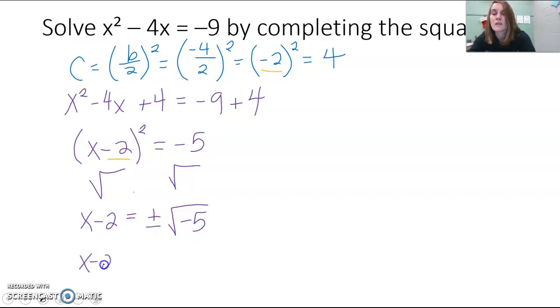So then x minus 2 equals plus or minus the square root of negative 5. Well, 5 is not a perfect square. 5 is a prime. So we actually can't even simplify that square root. But we have a negative inside the square root, which means we have an imaginary number. So we can pull that i out and leave it as i times the square root of 5.